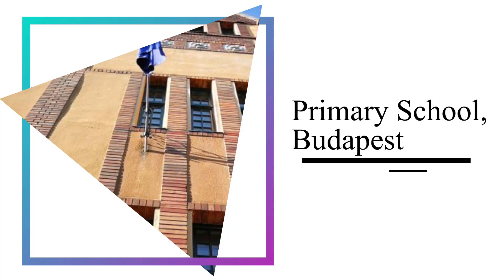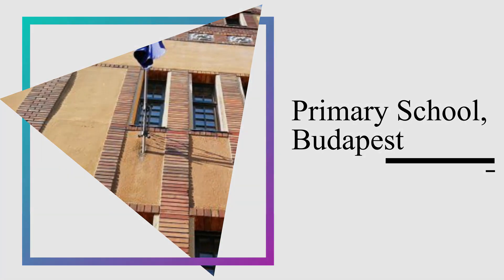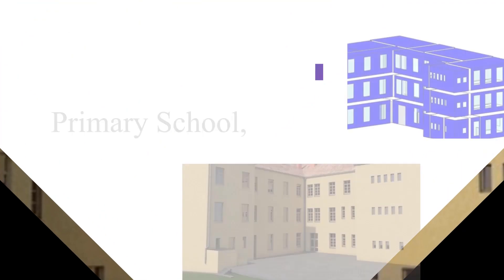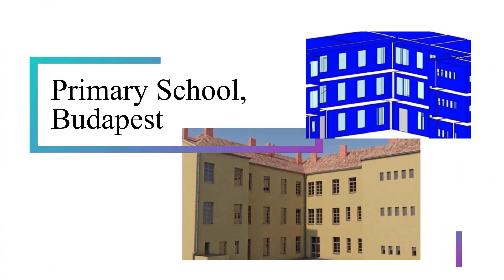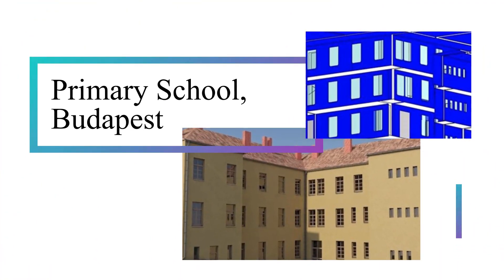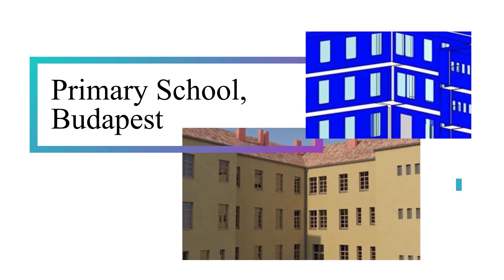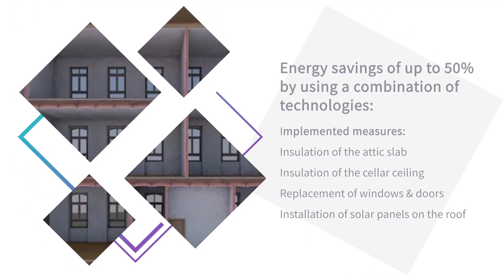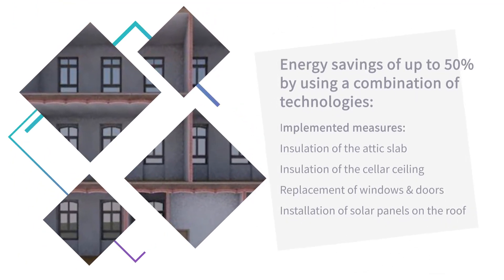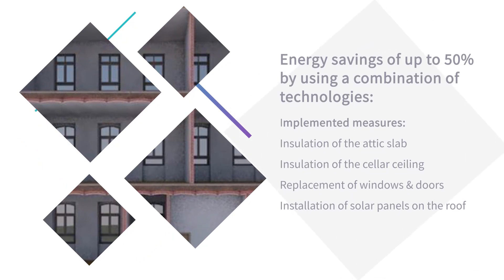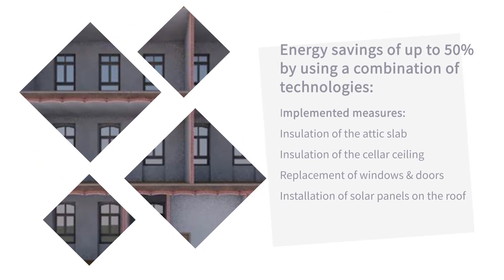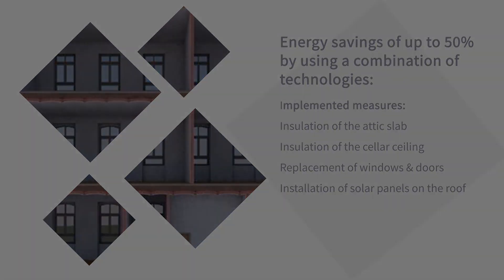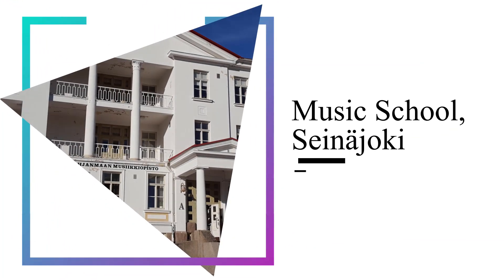In Budapest, Hungary, the managers of a school use the Technology Library to identify which technologies could be suitable for their building. They added valuable information to their 3D BIM model via the Data Manager, and using the Collaborative Design Platform they ran energy simulations to diagnose the current energy status and then selected the most suitable retrofit scenarios to improve it. The planners easily identified energy savings of up to 50% by using a combination of technologies.